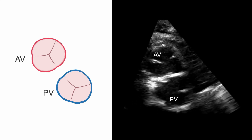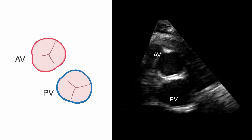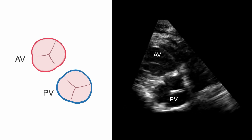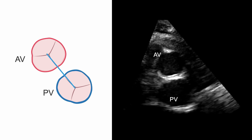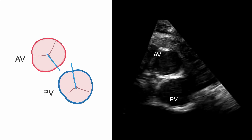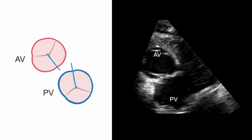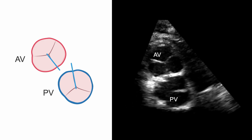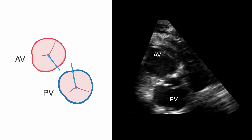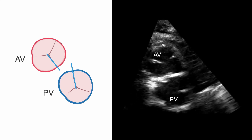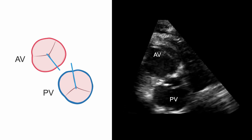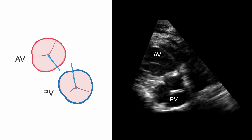The leaflets themselves should be in alignment. In other words, the valve commissures between the cusps should line up in the short axis plane. If the commissures do not line up, this is termed commissural malalignment, which may pose a greater challenge for the surgeon to re-implant the coronary arteries. This short axis imaging shows mild malalignment of the aortic and pulmonary valve commissures, and it may be helpful to slow down the image to view the commissures in better detail.